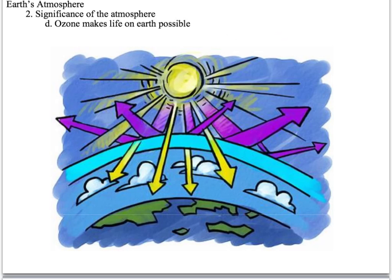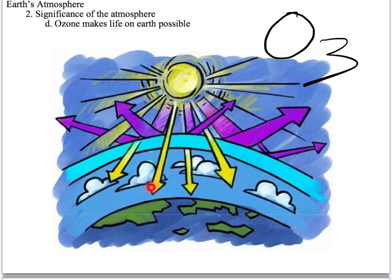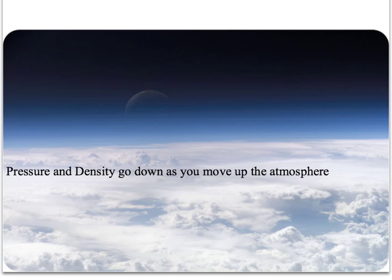In the stratosphere there is a layer with a high concentration of ozone, or O3. Ozone allows some radiation through but does a good job of blocking a lot of the ultraviolet radiation that would be harmful to our bodies. Finally, as you go up into the atmosphere, pressure and density both decrease until eventually you reach outer space, where there is no atmosphere left.